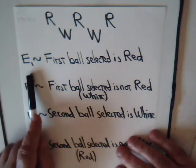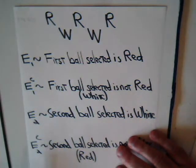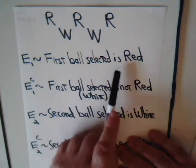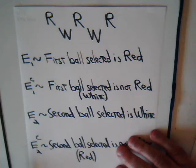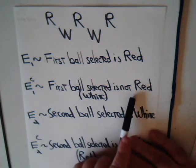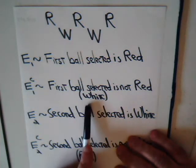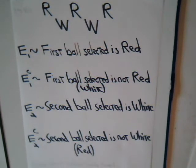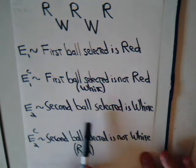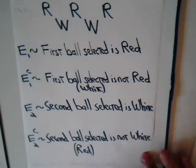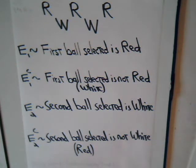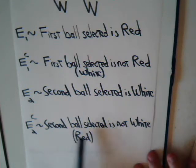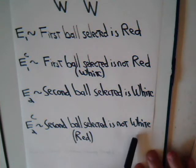E1 is the event that the first ball selected is red. The complementary event, E1c, would be the first ball selected is not red — which in this case would have to be a white ball. The second event, E2, designates that the second ball selected is a white ball. Its complementary event would be the second ball selected is not white — in this case, it would have to be a red ball.